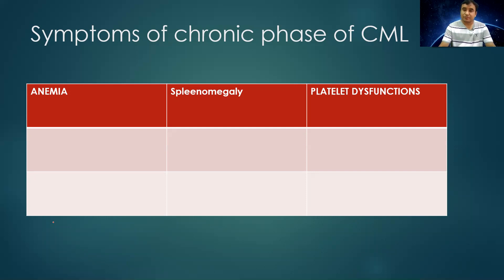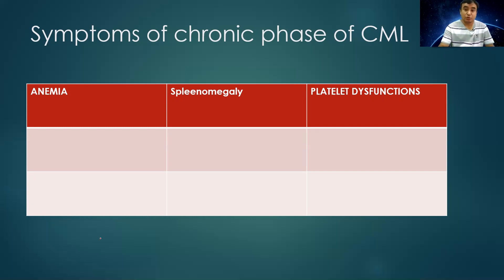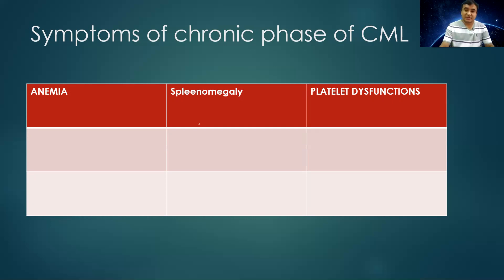Clinical features of anemia include fatigue, exertional shortness of breath, and tiredness. CML is also a condition associated with massive splenomegaly. If the spleen is enlarged, there can be features such as early satiety and a dragging sensation with pain in the left upper quadrant. Some patients can also have features of platelet dysfunction, including thrombosis — such as MI, stroke, or deep vein thrombosis.